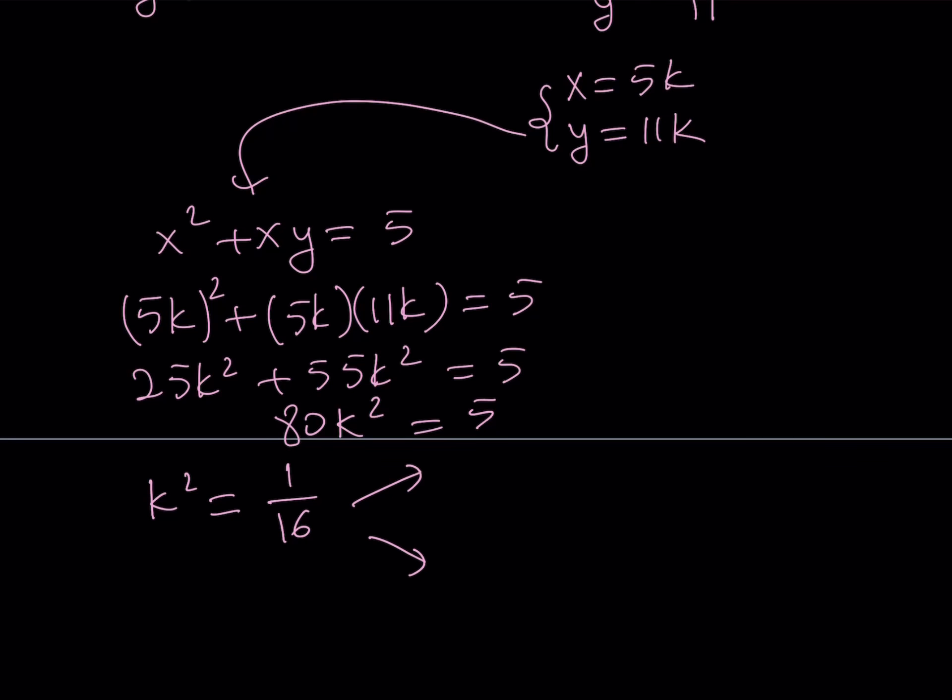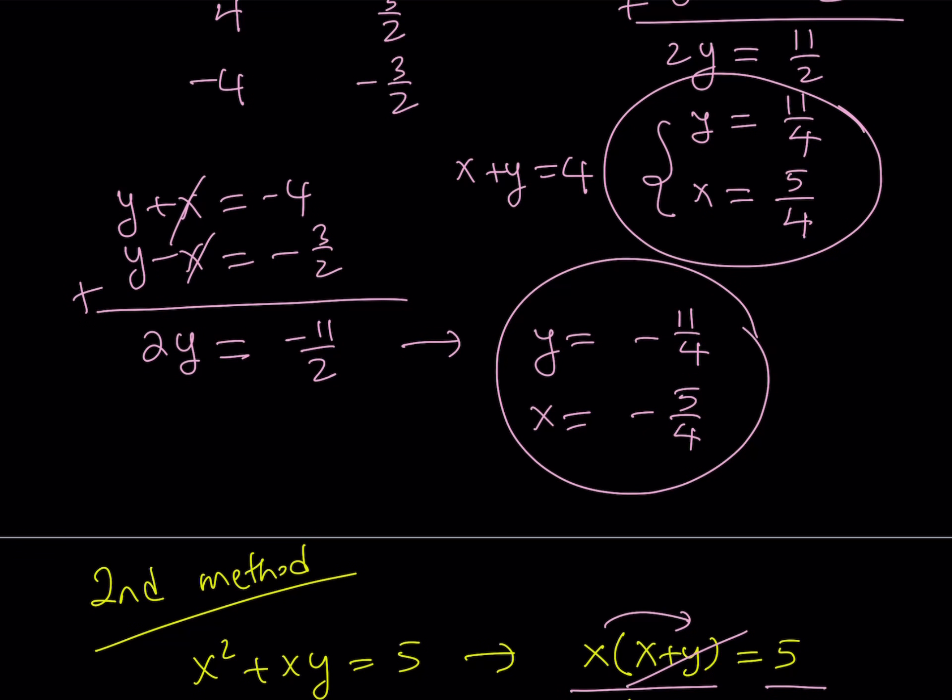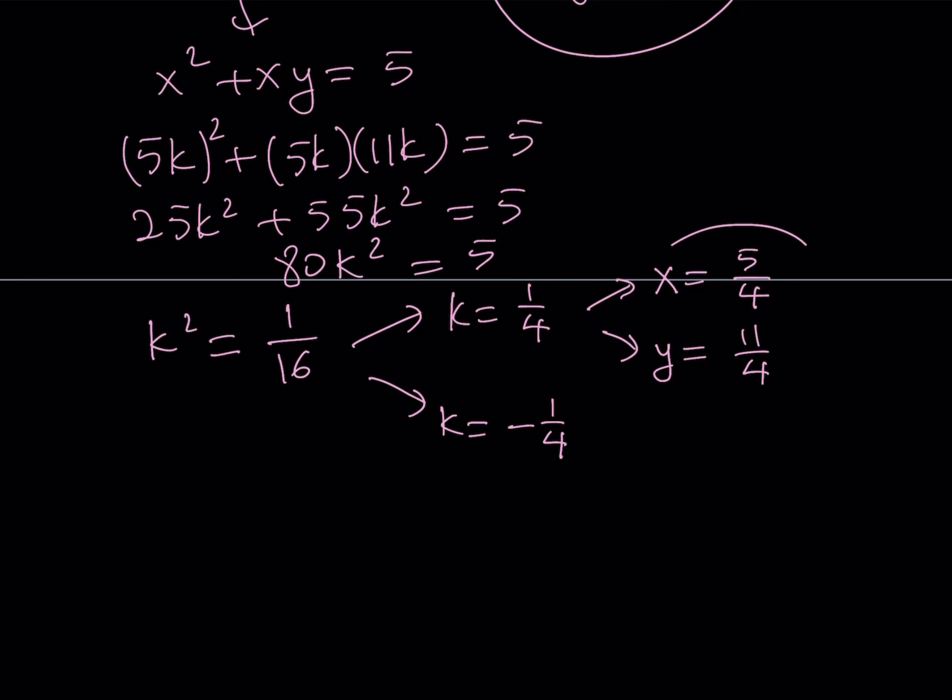Obviously, there are two solutions. There are two numbers whose square equals 1/16. One of them is 1/4. The other one is -1/4. So we got two solutions for k. But that just means that we can find the x and y values from here. Because x and y were written in terms of k. So x = 5k. If k = 1/4, then x is just going to be 5/4, and y is going to be 11/4. Which is pretty much the same thing that we found earlier with the first method. Of course, the answers will match.